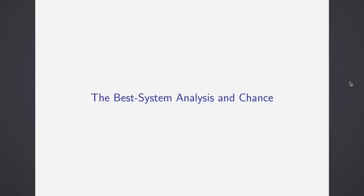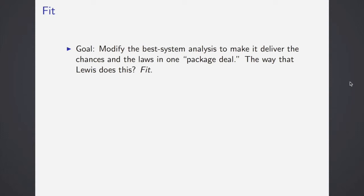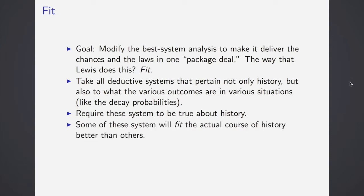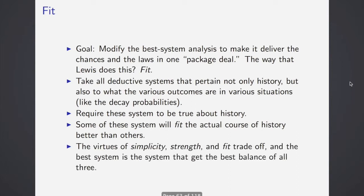Having solved that, we now come to the best system of analysis and adding in concept of chance that we explored earlier. The way that he does this is with his notion of fit. He wants to modify the best system analysis to make it deliver chances and laws in one package deal. Take all the deductive systems that pertain not only to history, but also to what the various outcomes are in various situations, like decay probabilities. Require these systems to be true about history, some of these systems will fit the actual course of history better than others. So the virtues, simplicity, strength, and fit trade off. And the best system is the system that gets the best balance of all three.